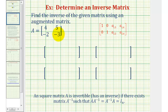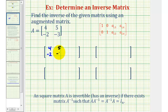Because we're given a two-by-two matrix, the augmented matrix will be a two-by-four matrix where the first two columns come from matrix A. The third and fourth columns come from the two-by-two identity matrix, so we have: one, zero, zero, one.